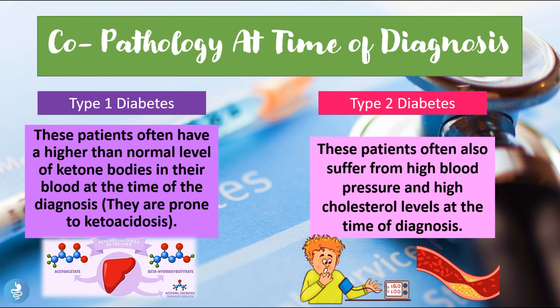Looking at co-pathologies at the time of diagnosis: in type 1 diabetes patients often have higher than normal levels of ketone bodies in their blood and are prone to ketoacidosis. Because the pancreas doesn't produce enough insulin, the body looks for different energy sources by breaking down fatty acids, and the byproduct of this process is ketone bodies. So there is glucose available but the body cannot use it due to lack of insulin, leading to high ketone body production and diabetic ketoacidosis.